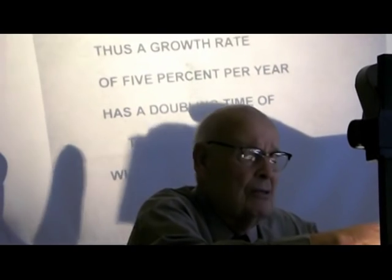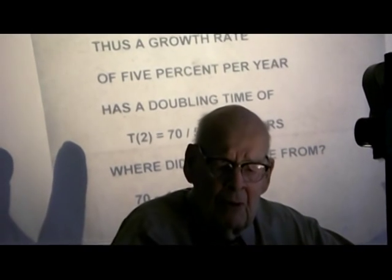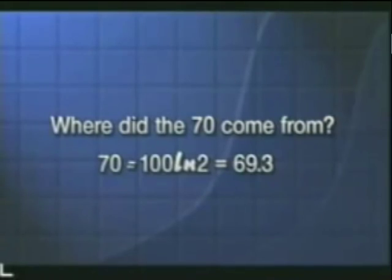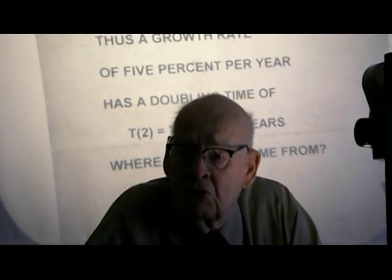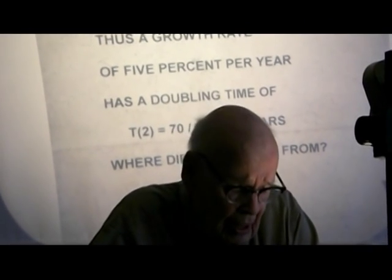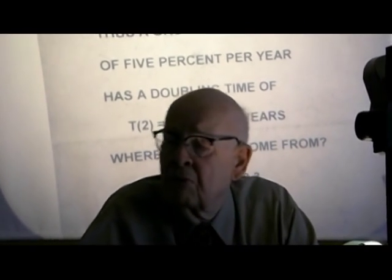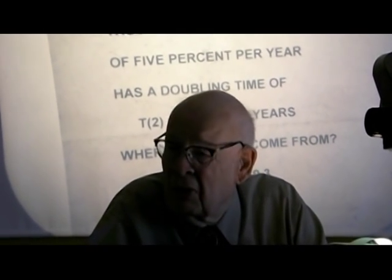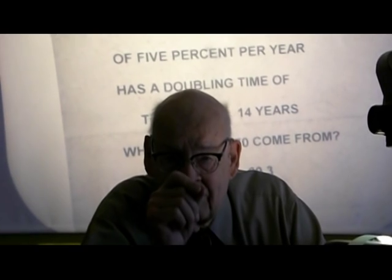You might ask, where did the 70 come from? The answer is it's approximately 100 multiplied by the natural logarithm of 2. If you wanted the time to triple, you'd use the natural logarithm of 3. So it's all very logical, but you don't have to remember where it came from if you'll just remember 70.